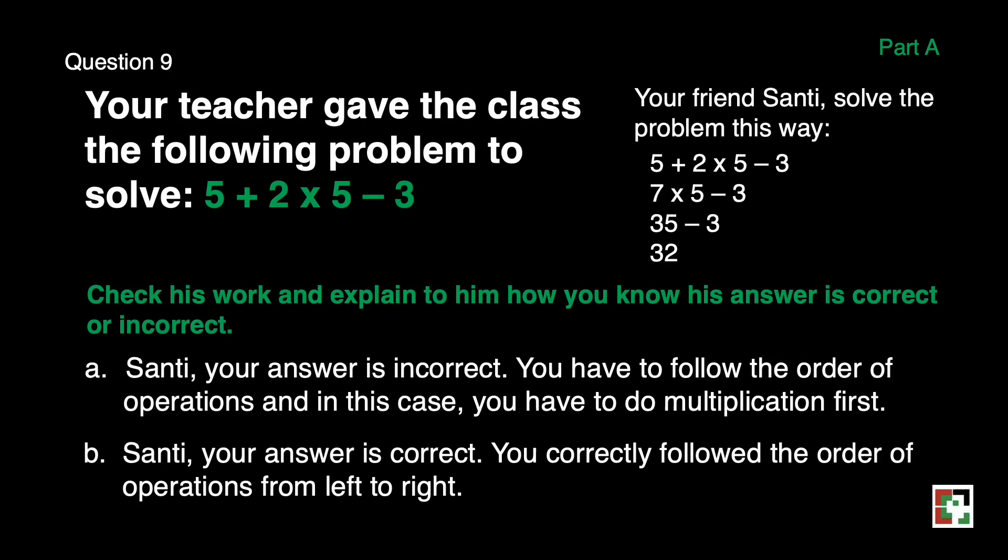Question number 9. Your teacher gave the class the following problem to solve: 5 plus 2 times 5 minus 3. Your friend Santee solved the problem this way: 5 plus 2 times 5 minus 3, 7 times 5 minus 3, 35 minus 3, and the final answer is 32. Check his work and explain to him how you know his answer is correct or incorrect. A, Santee, your answer is incorrect. You have to follow the order of operations and in this case, you have to do multiplication first. Or B, Santee, your answer is correct. You correctly follow the order of operations from left to right.